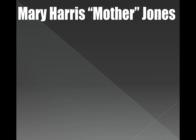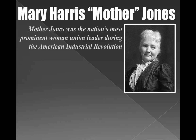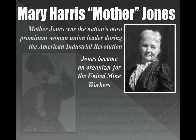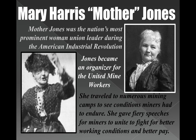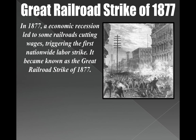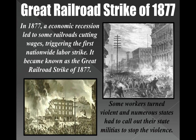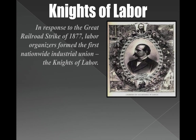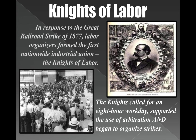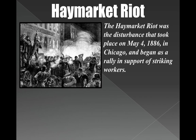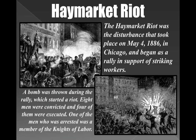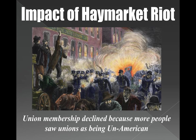Still, people fought for the rights of workers, including Mother Jones — one of the first women union leaders in the country. She organized the United Mine Workers Union, gave fiery speeches, and worked for better pay. There were some incredible strikes, like the 1877 Great Railroad Strike — a strike is when you stop working to protest. These became violent and state militias were called out. The Knights of Labor were founded, calling for an eight-hour workday and supporting arbitration to end strikes. In 1886, the Haymarket Riot in Chicago led to people dying, and some were convicted and even executed. The riot made more people think unions were un-American.